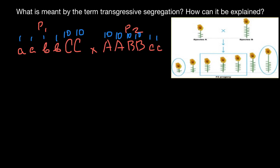That means the phenotypes would be different for each parent. Parent one on the left would have a phenotype of 1 + 1 + 1 + 1 + 10 + 10 = 24 cm. Parent two with the genotype capital A, capital A, capital B, capital B, small c, small c would produce a phenotype of 10 + 10 + 10 + 10 + 1 + 1 = 42 cm.